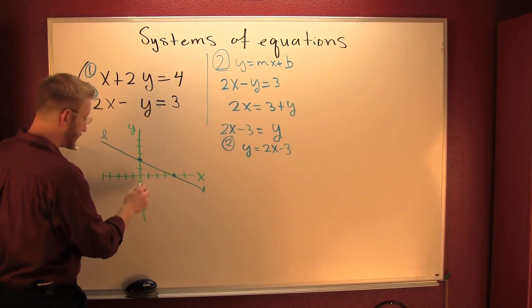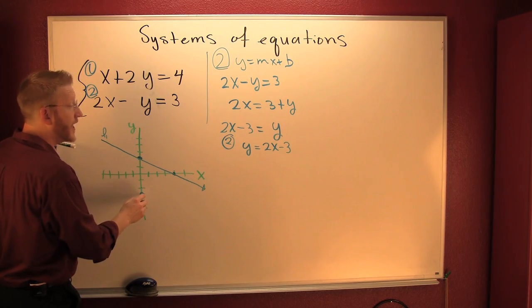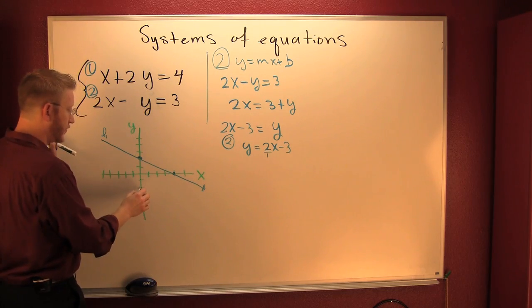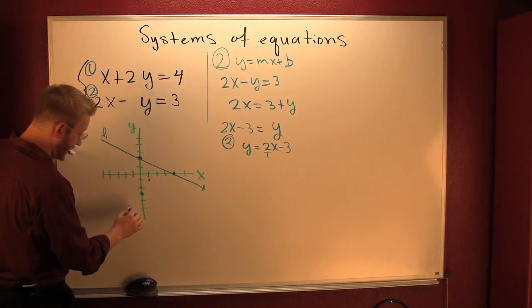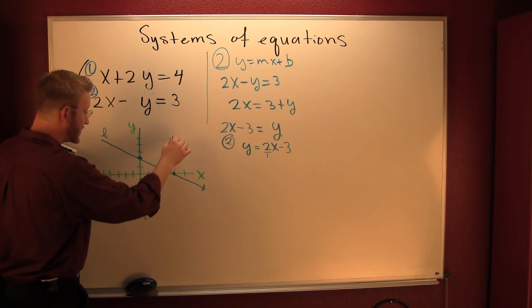And so where do I start? I start at minus three. One, two, three on the y. I put a dot there. And then I go up two over one. So I go up one, two, right one. And then I connect the dots. La la la la, connect the dots.